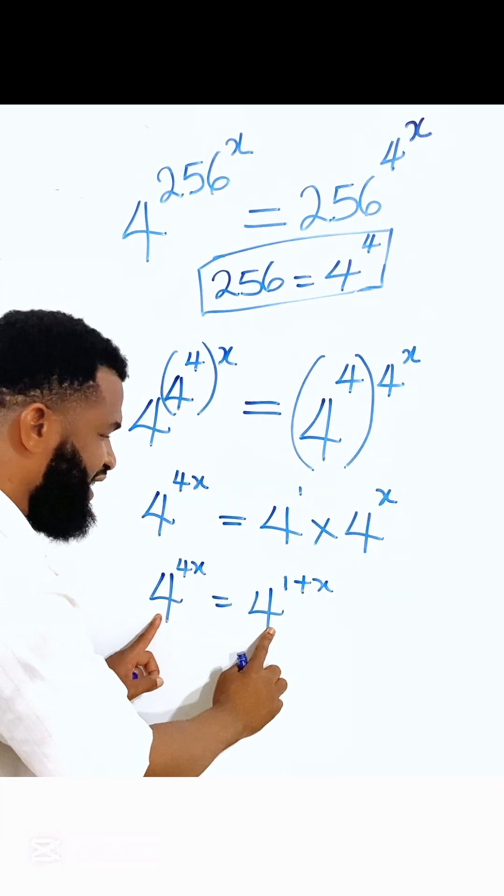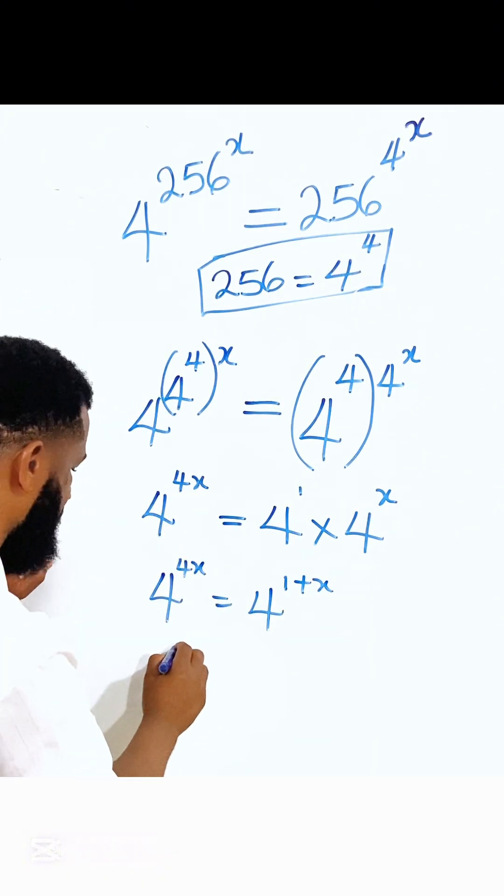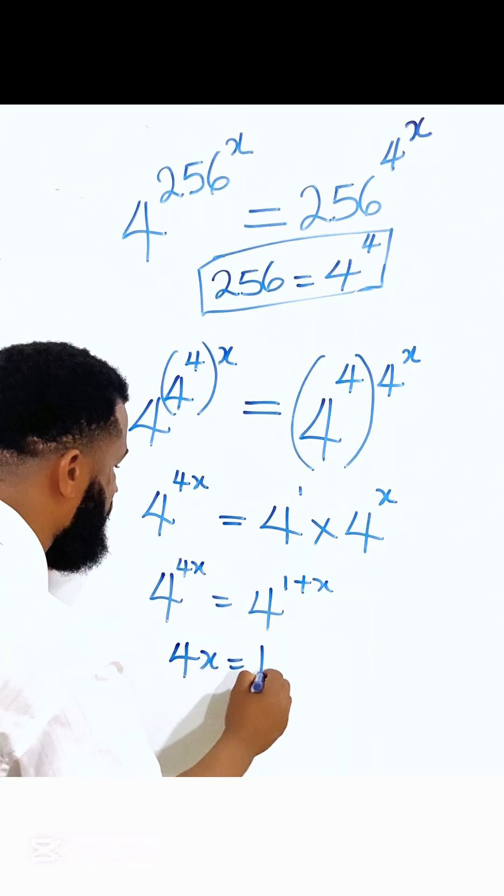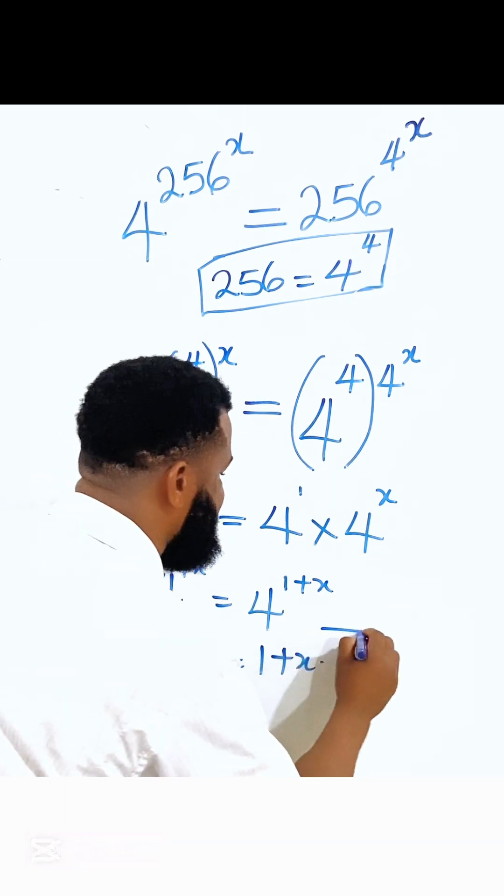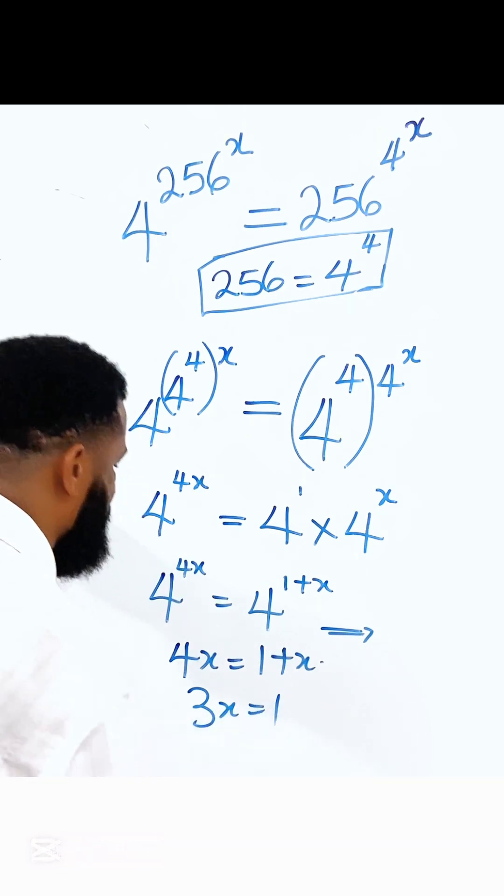So since their bases are the same thing, I'm going to equate the powers. Again, so I have 4x is equal to 1 plus x. And this implies that 3x is equal to 1.